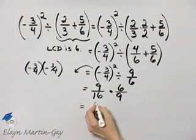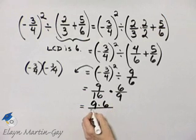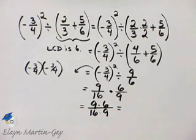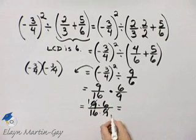That is numerator times numerator over denominator times denominator. Let me work a little here to the right. Before we actually multiply all this, let's look for common factors. Notice I have a common factor of nine.